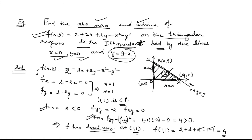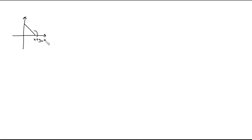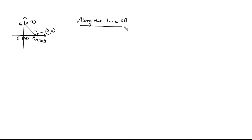Now we need to check at the boundary points. The boundaries are line OA, line AB, and line OB. We first consider line OA. Along line OA, y = 0 and x varies from 0 to 9. Substituting y=0 into the function gives us a function of x alone.